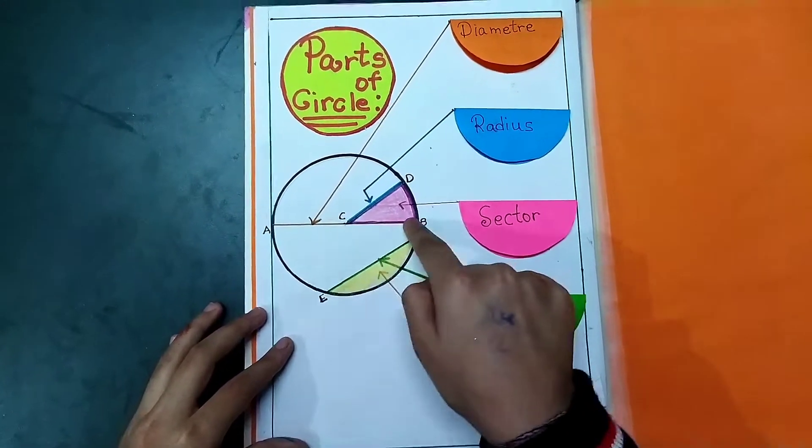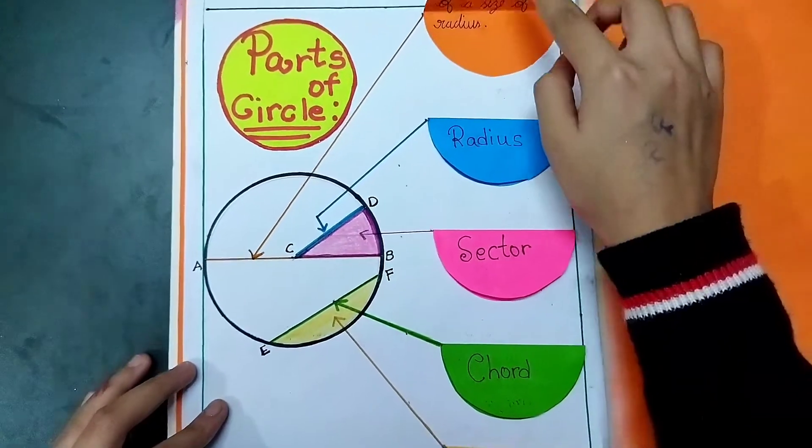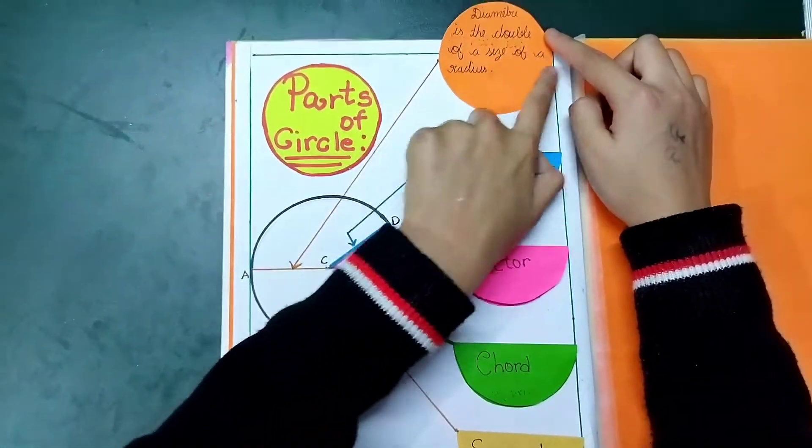Diameter. You can see this orange line. This is diameter. Here is the definition: Diameter is double the size of a radius.